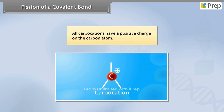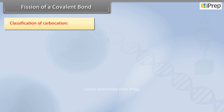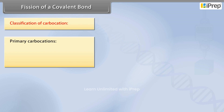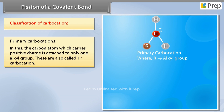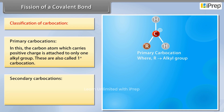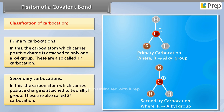All carbocations have a positive charge on the carbon atom. Classification of carbocations — Primary carbocations: the carbon atom which carries a positive charge is attached to only one alkyl group. These are also called one-degree carbocations.